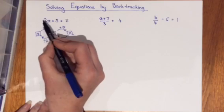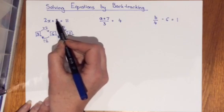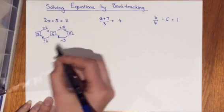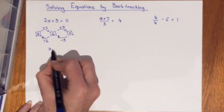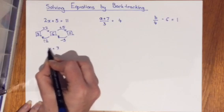We can check that. 2 times 3 is 6 plus 5 is 11. Yes it works. So underneath my working out I make sure I clearly write my answer that x equals 3.